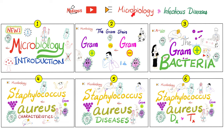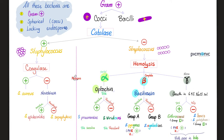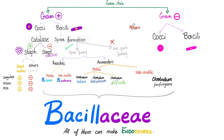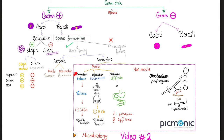Clostridium tetani is a gram-positive rod, spore-forming, strictly anaerobic, yet motile. It causes a disease known as tetanus. By inhibiting GABA, it causes spastic paralysis.